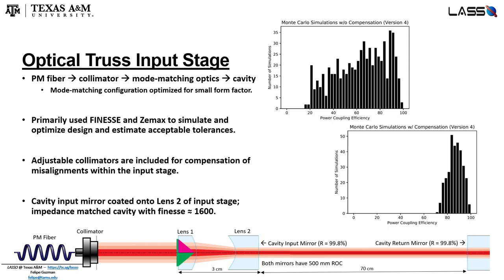On the right, we have some results of our Monte Carlo Finesse simulations, where we estimated manufacturing tolerances and also simulated the use of an adjustable fiber collimator to compensate for the various lens misalignments throughout the input stage.